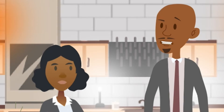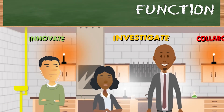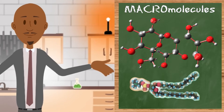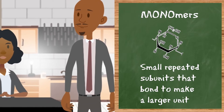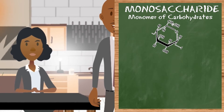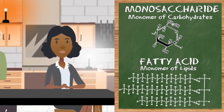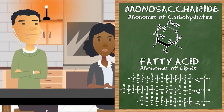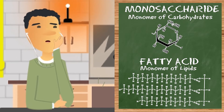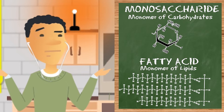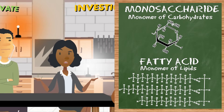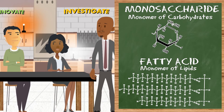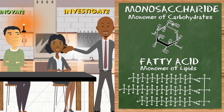To understand why macromolecules behave the way they do, we have to look at their structure. They're called macromolecules because they're made of smaller molecules bonded together — these smaller units are known as monomers. Looking at the monomers of carbs and lipids, both have a lot of carbon, hydrogen, and oxygen, but lipids have many more of them.